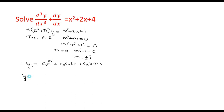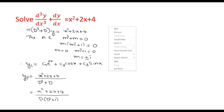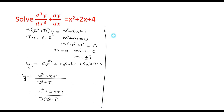Now, to find the particular integral yp, there are two methods: either using the binomial expansion or by the division method. We are going to use the division method. In the division method, write the function as it is divided by the differential operator. So this will be (x² plus 2x plus 4) divided by the operator. Note that d is taken common in the denominator, giving (d² plus 1). The 1/d denotes the integral operator — it represents integration. We first divide and then integrate.